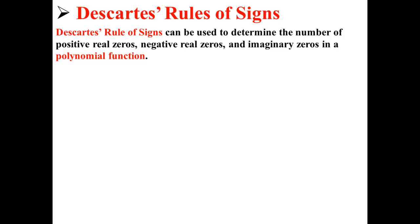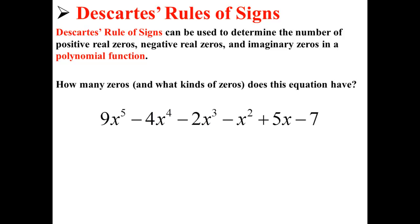Descartes' Rule of Signs can be used to determine the number of positive real zeros, negative real zeros, and imaginary zeros in a polynomial function. How many zeros, and what kinds of zeros, does this equation have? 9x to the 5th minus 4x to the 4th minus 2x to the 3rd minus x squared plus 5x minus 7.